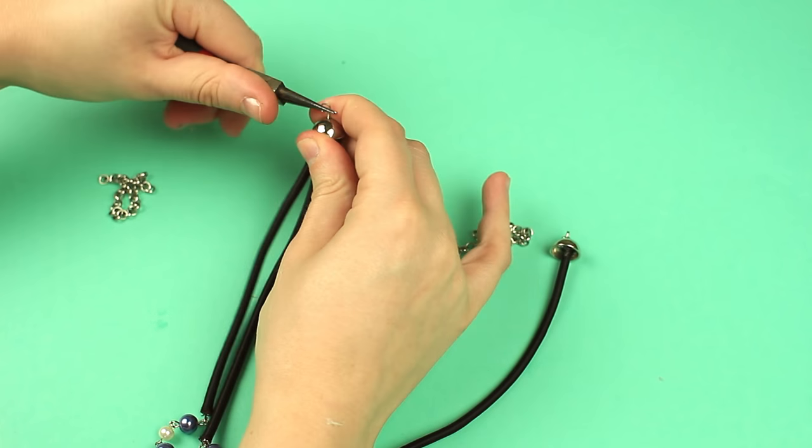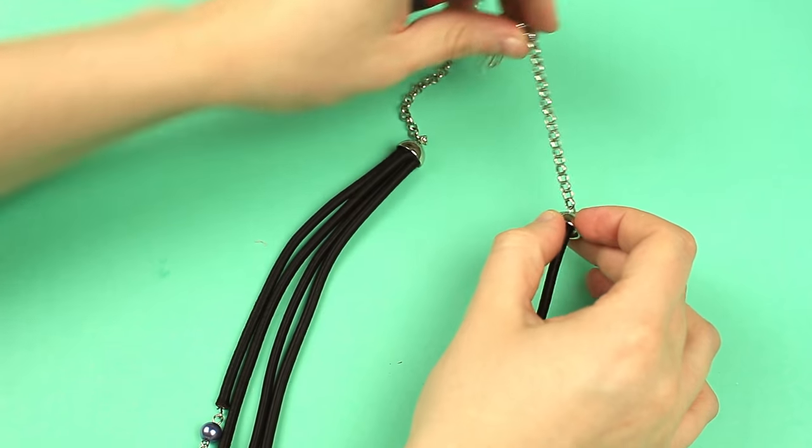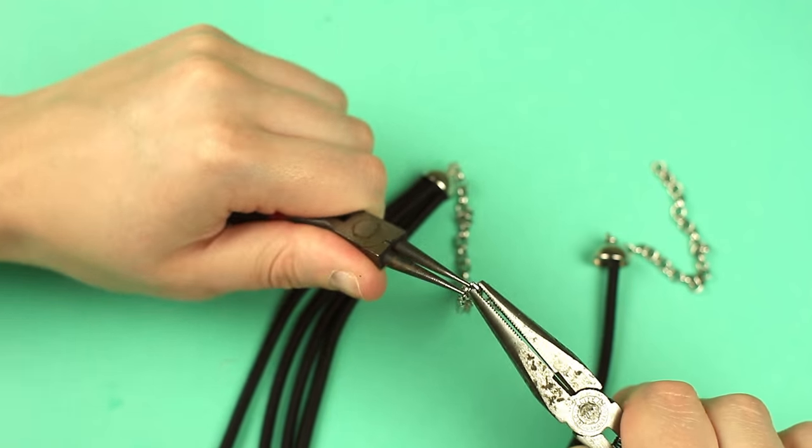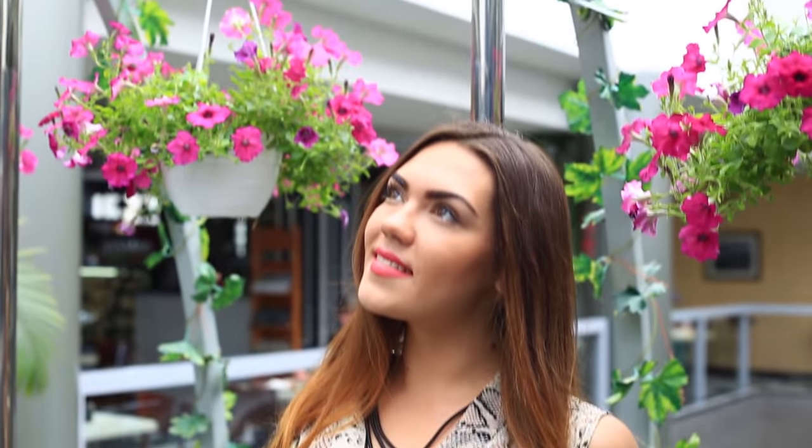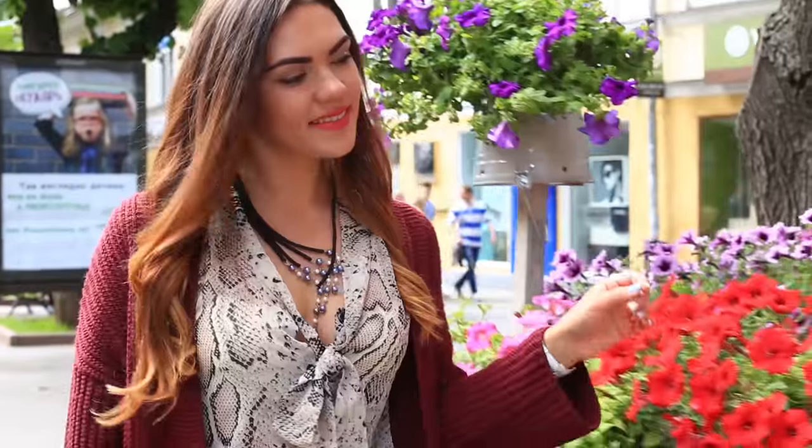Put 2 chain pieces on both sides of the necklace. Fasten a lobster clasp to the chain. This elegant, asymmetrical elastic necklace will match both business suit and casual dress.